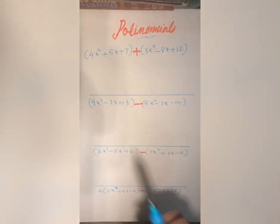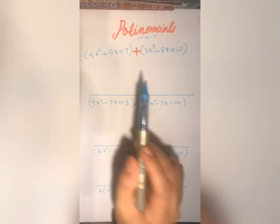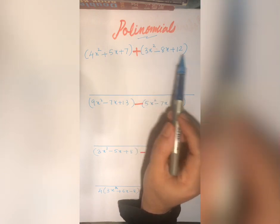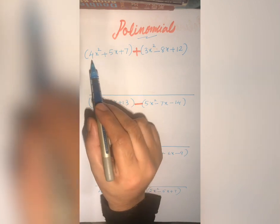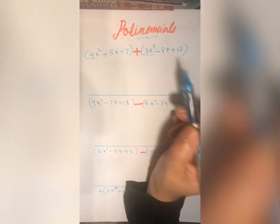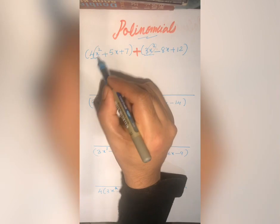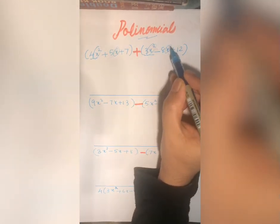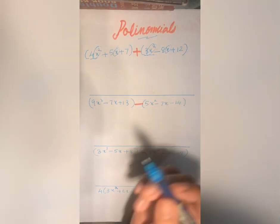First one is addition. In this polynomial there are 3 terms: 4x square, 5x and 7. The second polynomial has terms 3x square, minus 8x and 12. Adding the polynomial means adding the like terms. 4x square and 3x square are like terms as both have x square as the variable. 5x and 8x are like terms as both have x as a variable, and 7 and 12 are the constants.